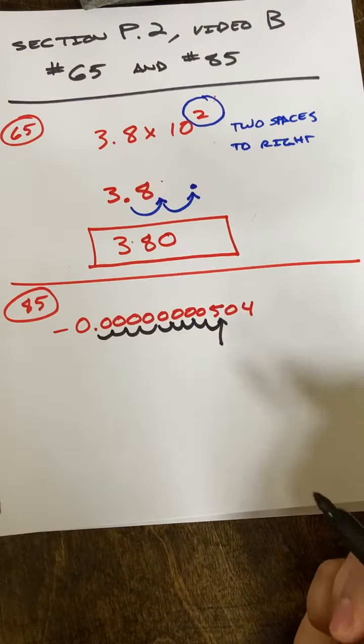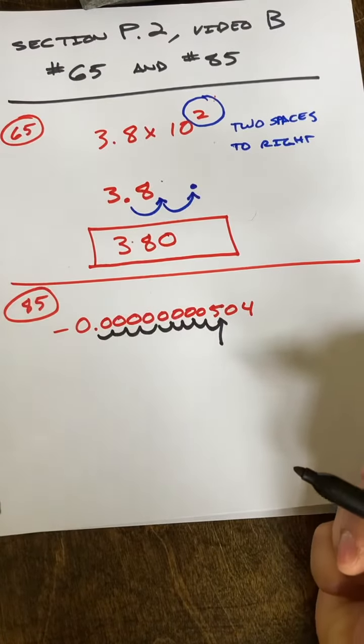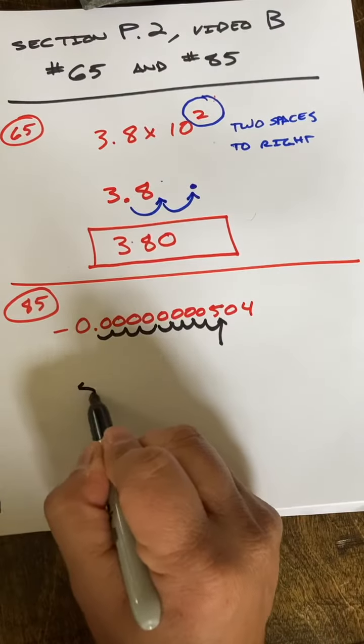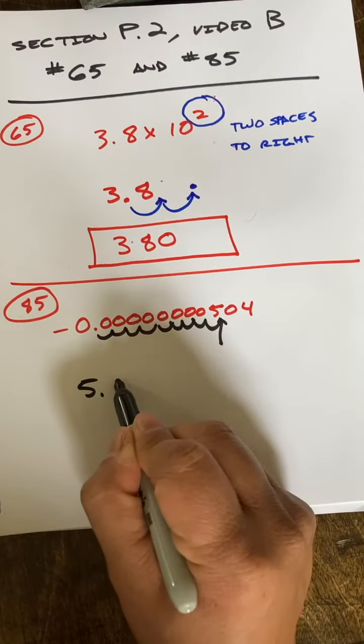Nine places to the right. Okay, so what that means is my number is going to be 5.04.